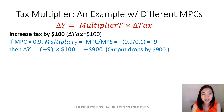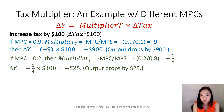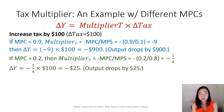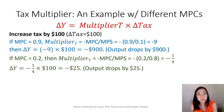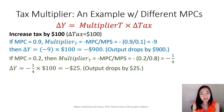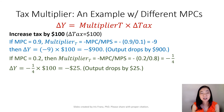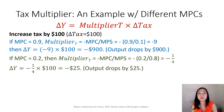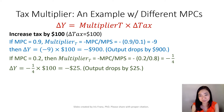Now let's look at a smaller MPC. Wealthy people typically have a lower MPC because they don't spend most of their paycheck. Suppose MPC is equal to 0.2, then the tax multiplier equals negative MPC over MPS, which gives you negative one-quarter. So if tax goes up by $100, output is going to go down by $25, because negative one-quarter times 100 equals negative 25. Output would drop by only $25.